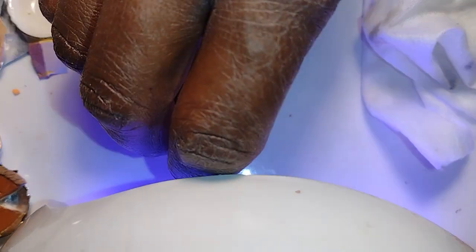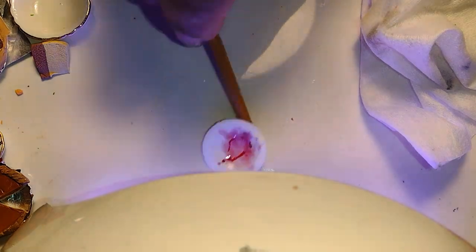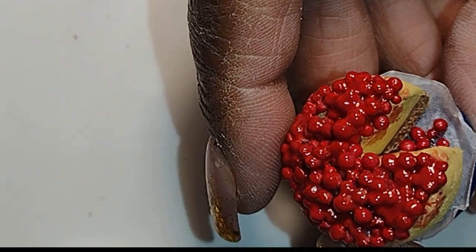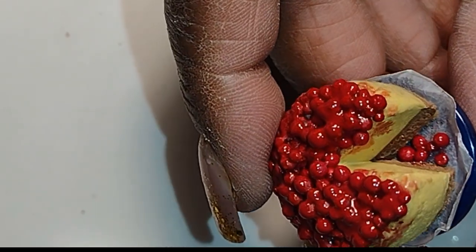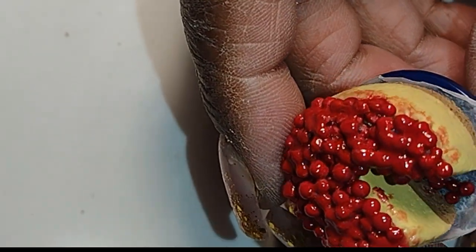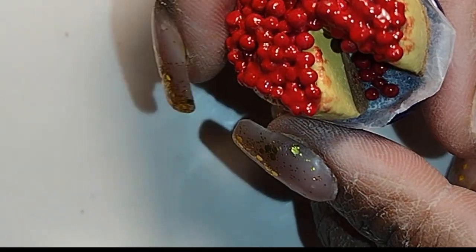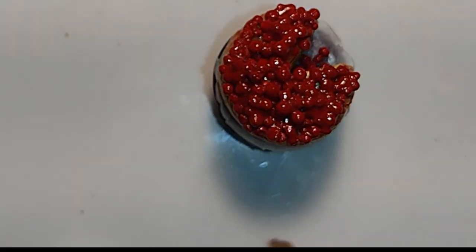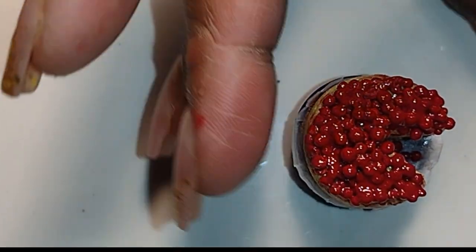Now again, cure your items based on the instructions on your UV resin package. And here we are dolls, a cherry cheesecake, specially made just for daddy. I'm so excited about Thanksgiving this week dolls, and it's almost time to set the table. Now dolls, if you're interested in any of the materials I used today in this video, I have links in the description box below.